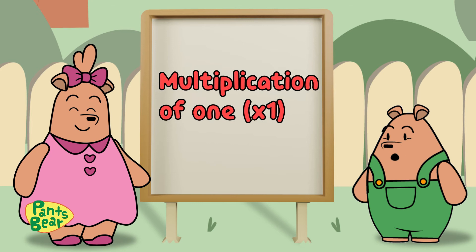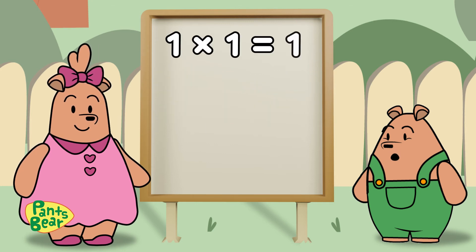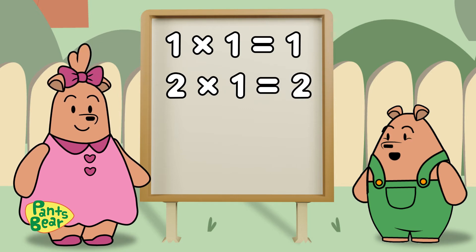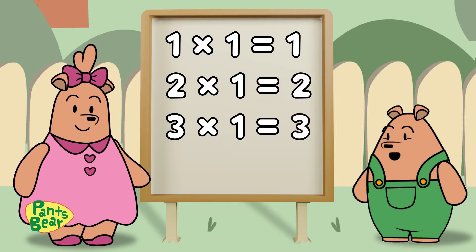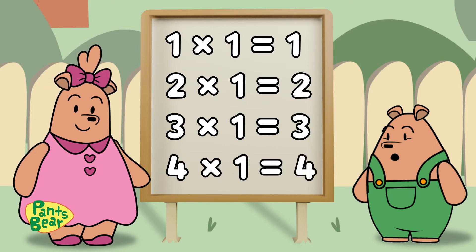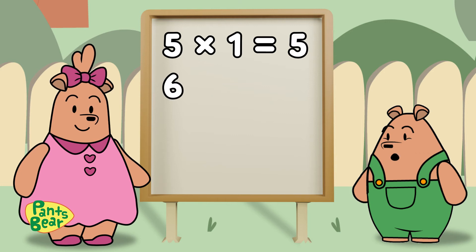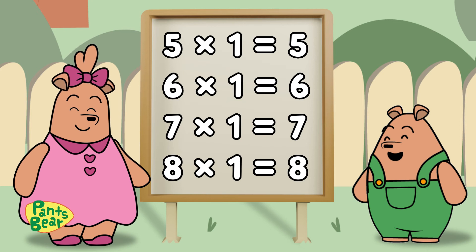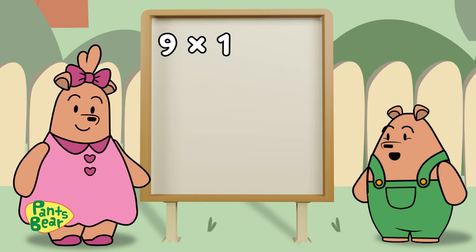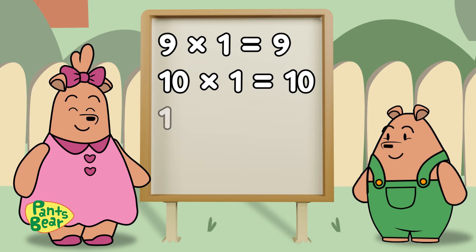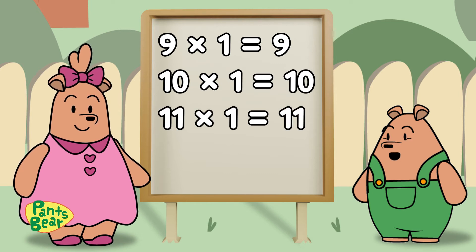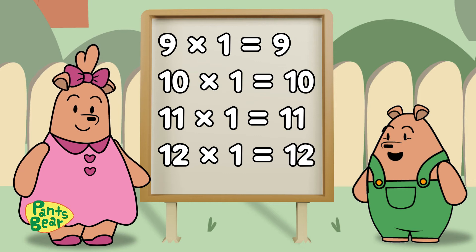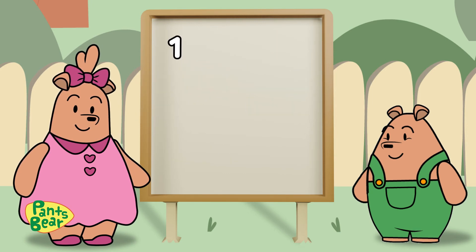Multiplication of 1. 1×1=1, 2×1=2, 3×1=3, 4×1=4, 5×1=5, 6×1=6, 7×1=7, 8×1=8, 9×1=9, 10×1=10, 11×1=11, 12×1=12.